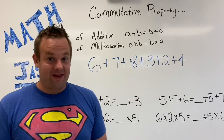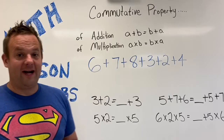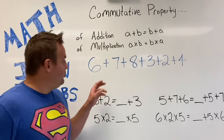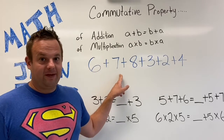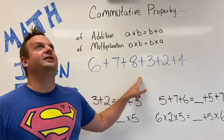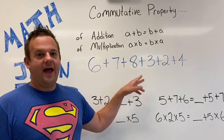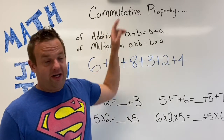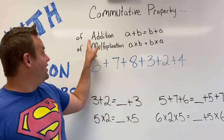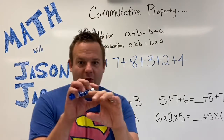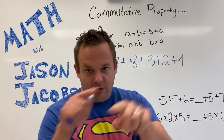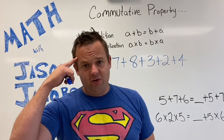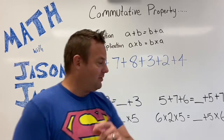Did you get 30? Because 30 would be the right answer. And here's a little trick. A lot of you probably went six plus seven is 13, then 13 plus eight is — and that's daunting. But if you use the Commutative Property of addition, what you can do is rearrange those addends. You can rearrange those addends just the way you want, in your head or right on the paper.